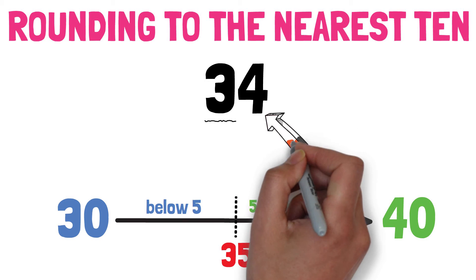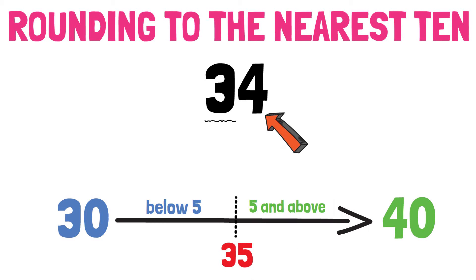So, we need to look at the ones. The value of the ones is 4. Which side does 4 belong to? Yes, correct. It is smaller than 5. It belongs to the left side.